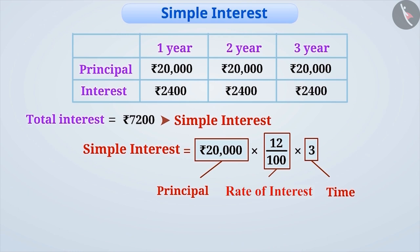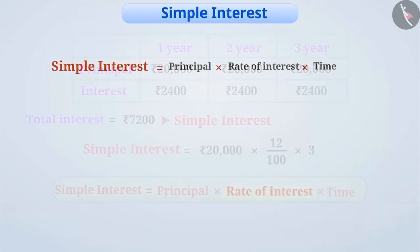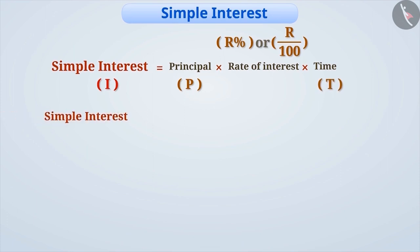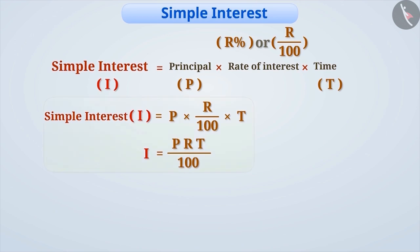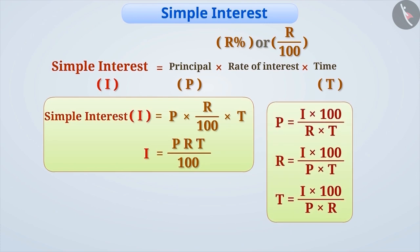Can you formulate an expression for calculating simple interest? Think for a while. If we represent simple interest as I, principal with P, rate of interest with R% or R/100, and time with T, then the formula to calculate simple interest is: I = P × R/100 × T, or PRT/100. Remember, time should always be expressed in years. If time is given in months, convert it into years by dividing by 12. Also, if we know the value of any three quantities among these four, we can find the value of the fourth unknown quantity by slightly modifying the formula.